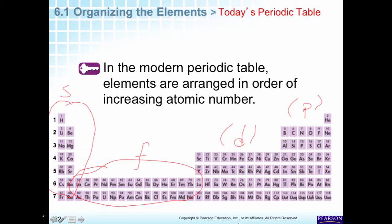Let's pick carbon. Carbon is 1s², which brings us to helium. Then it's 2s². And then we go to 2p — 1, 2. It should add up to 6: 2 plus 4 is 6. It's in the second row, so we know 1s² is filled, then 2s², and now we're in the P's. We only went to the second P, so that's 2p². If our element is here in the P block, the last electron to fill is going to be in the P group.